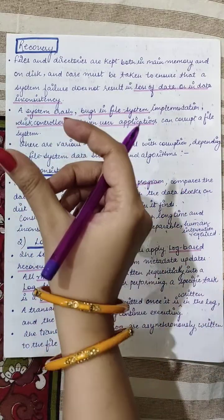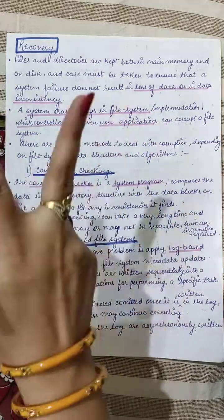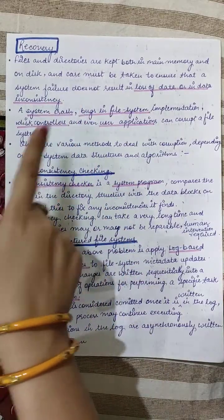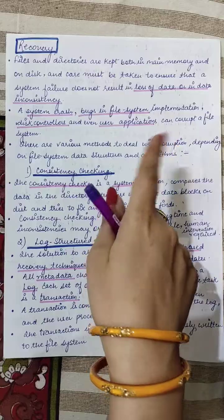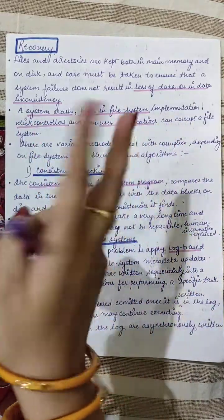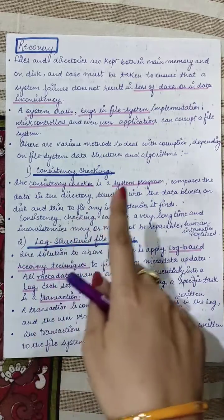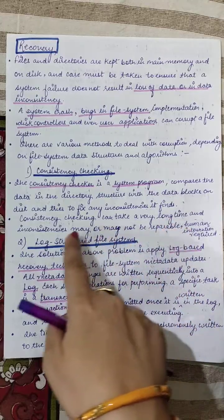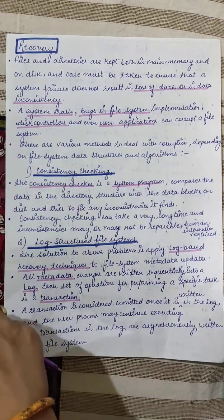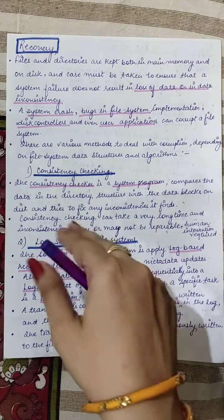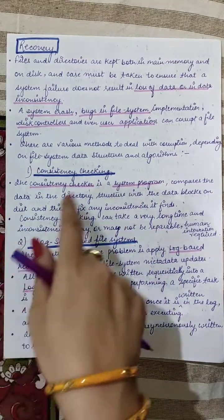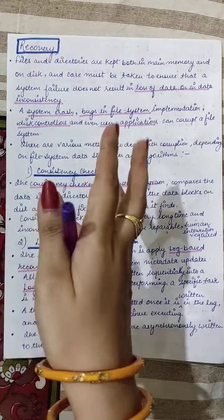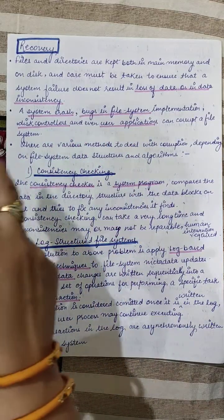Consistency checking compares the data in the directory structure on the system with the data blocks on the disk. If it finds any difference between the two, it will try to fix that inconsistency. However, this process takes a long time, inconsistencies may or may not be repairable, and it requires human intervention since someone must run the system program periodically.